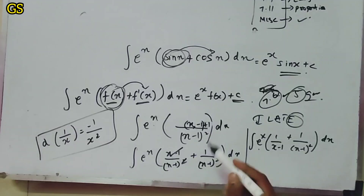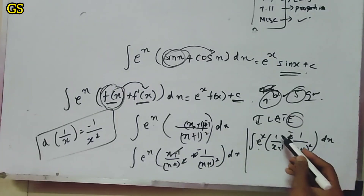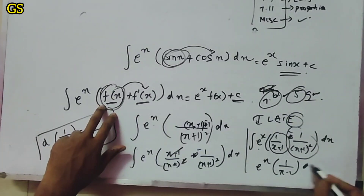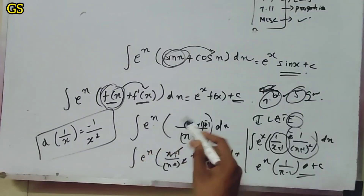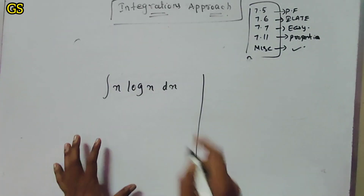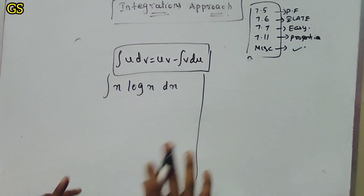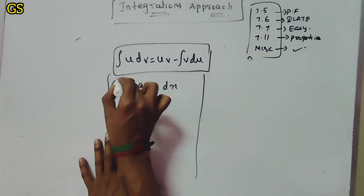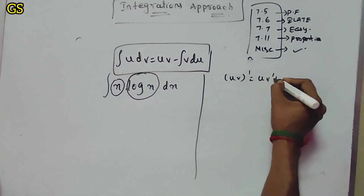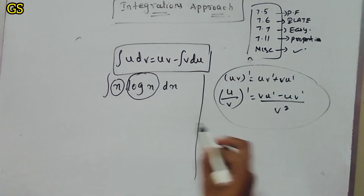So you can see that if you choose f(x) as 1 over (x minus 1), plus 1 over (x minus 1) squared — f(x) is 1 over (x minus 1), f'(x) is minus 1 over (x minus 1) squared. So e^x times [f(x) plus f'(x)] applies here. Integration by parts formula: integration of u dv equals uv minus integration of v du.